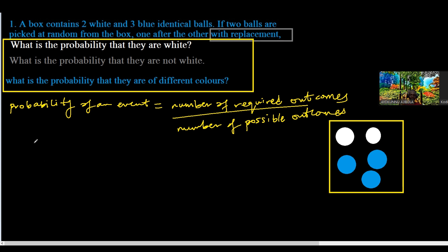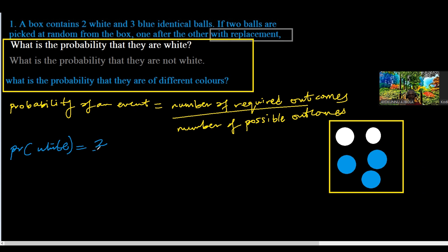The probability of picking the first white: how many white balls are there? There are two. So the number of required outcomes — the chances of picking white from among the two — is two chances. And if I pick anyone at random, there are five balls, so I have five total chances. That is two over five for just one ball.